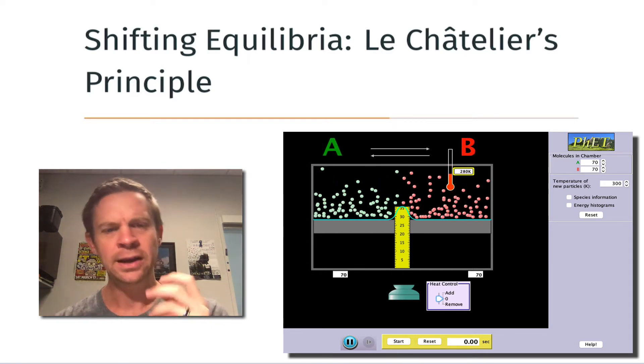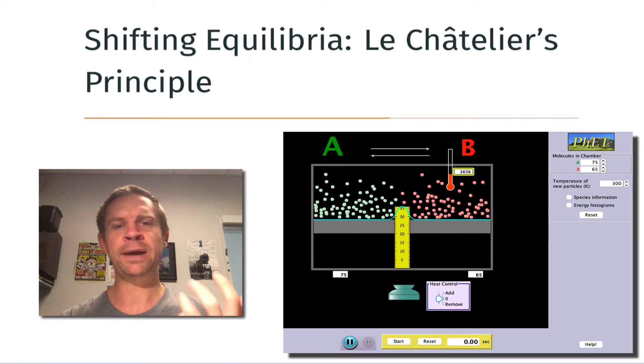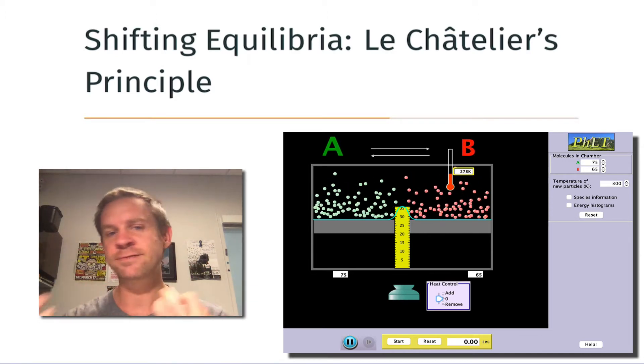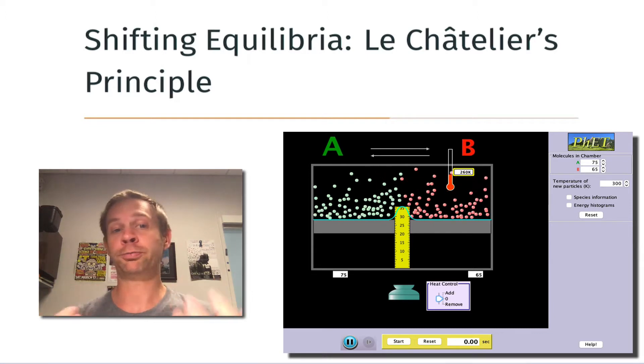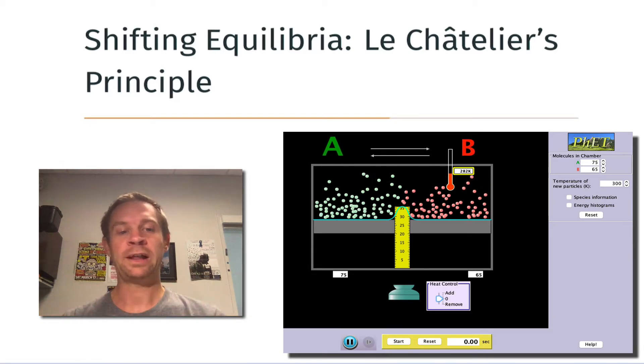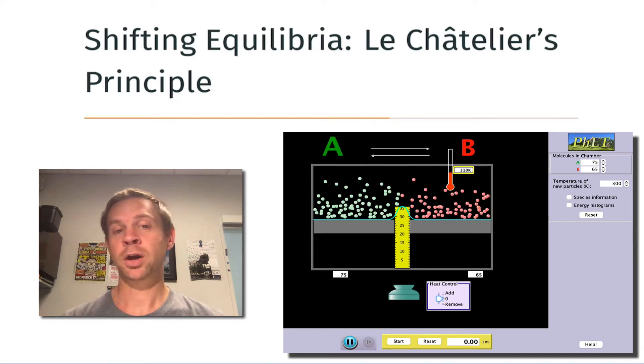You can see in the simulation that the numbers of A and B molecules are basically hovering right around 70 molecules on each side. Although there are small fluctuations, these numbers remain more or less constant over time.